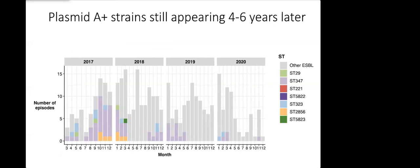You can see many of the same colors that we've seen before. The Klebsiella variicola ST347 is now very prevalent especially in 2017 and early 2018. But we also see the emergence of a new strain now carrying plasmid A, ST2856, which then goes on to cause an outbreak as well as a single ST5823.